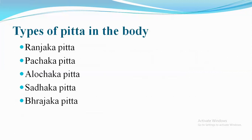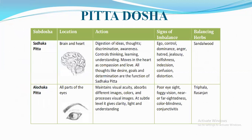The 5 sub-types of Pitta are: Ranjak Pitta, Pachak Pitta, Alochak Pitta, Sadhak Pitta, and Bhrajak Pitta. Starting with Sadhak Pitta — its location is in the brain and heart. Its actions include digestion of ideas, thoughts, discrimination, awareness, controls thinking, learning, understanding, and it moves in the heart as compassion and love. All thoughts like desire, goals, and determination are functions of Sadhak Pitta.